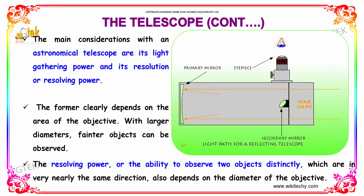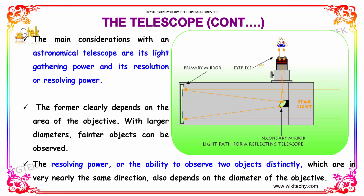The main considerations with an astronomical telescope are its light gathering power and its resolving power. The light gathering power clearly depends on the area of the objective — with larger diameter objectives, fainter objects can be observed. The resolving power is the ability to observe two closely spaced objects distinctly, and it also depends on the diameter of the objective.